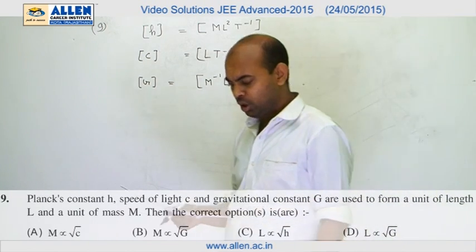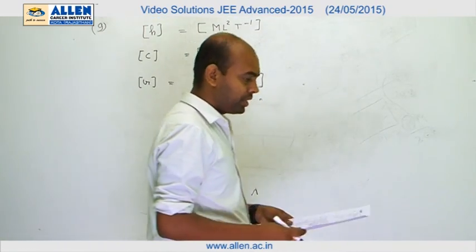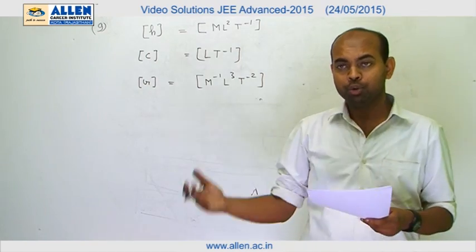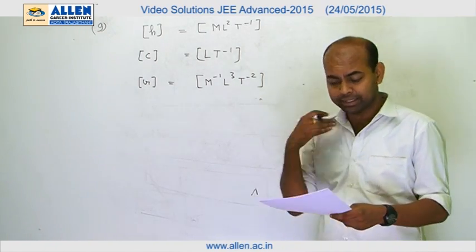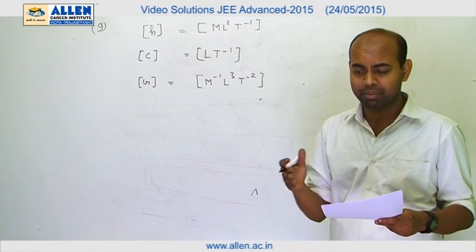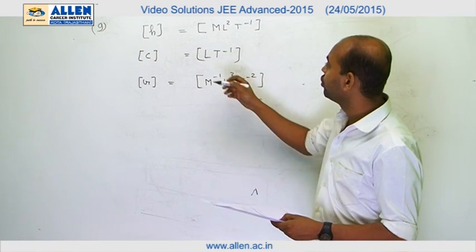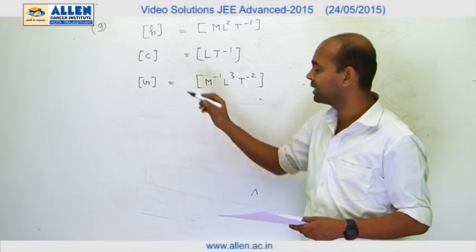Question number 9 of paper 1 is a simple question based on dimensional analysis which we used to do all the time in physics. In this case, in place of assuming M, L and T as basic units, they assume Planck's constant, speed of light and universal gravitational constant as basic units.